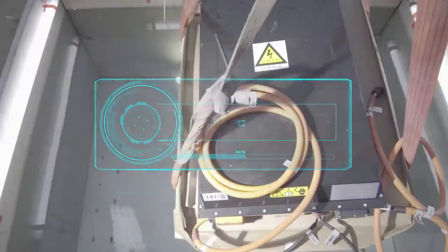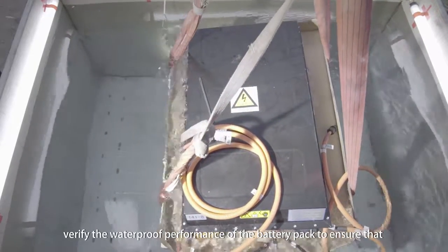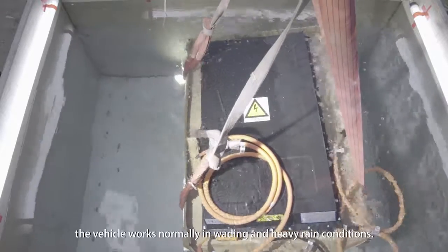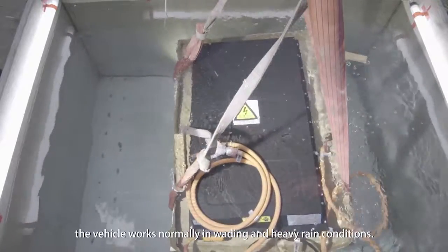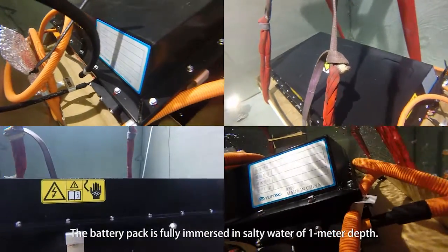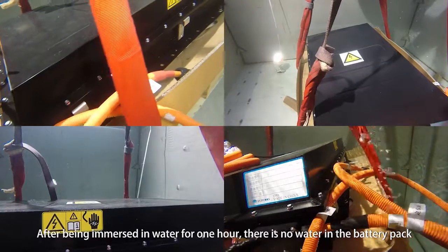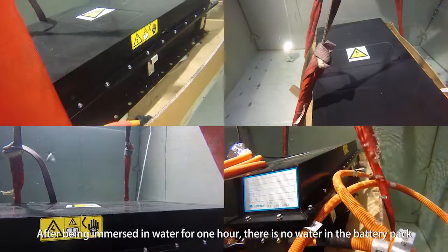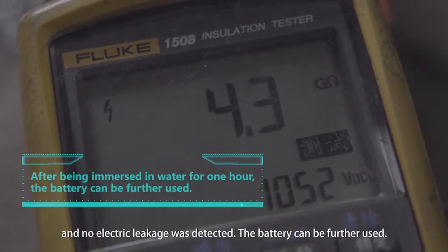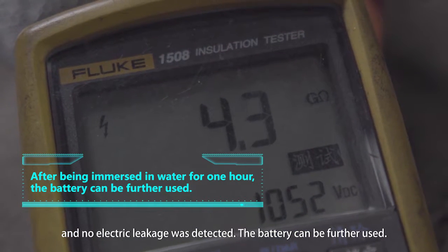Water immersion test of battery pack. Verify the waterproof performance of the battery pack to ensure that the vehicle works normally in wading and heavy rain conditions. The battery pack is fully immersed in salty water of 1 meter depth. After being immersed in water for 1 hour, there is no water in the battery pack and no electric leakage was detected. The battery can be further used.